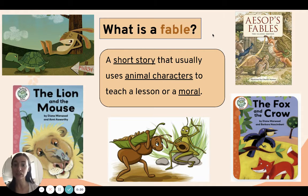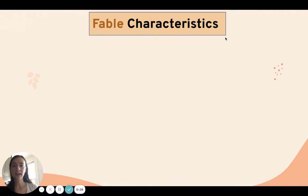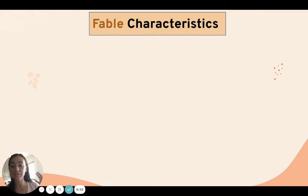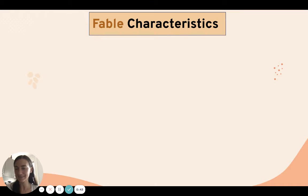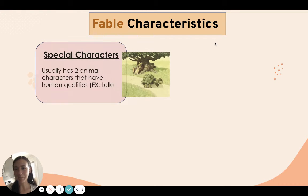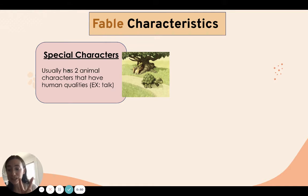Remember, a fable is a short story that usually uses animal characters to teach a moral or a lesson. And remember, we talked about fable characteristics, just like we learned about the fairy tale characteristics. Fables have special characters — usually two animals — and the characters usually have human qualities, like animals that are talking.